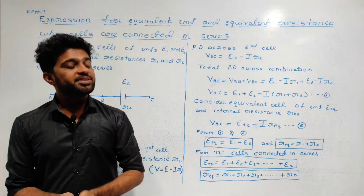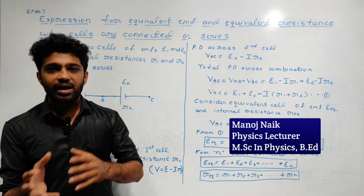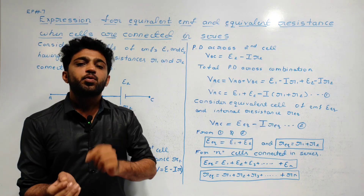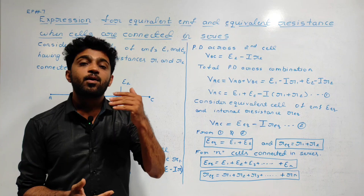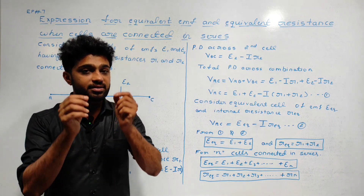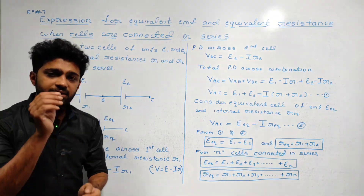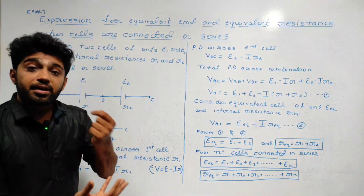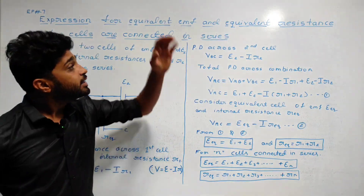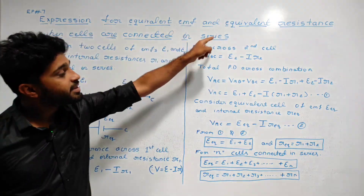Hi! Welcome to EducateLad4Life. Welcome to this class. In this class, we will study the electrolytic cell. This is class number 7. We are deriving the expression for equivalent EMF and equivalent resistance when cells are connected in series.